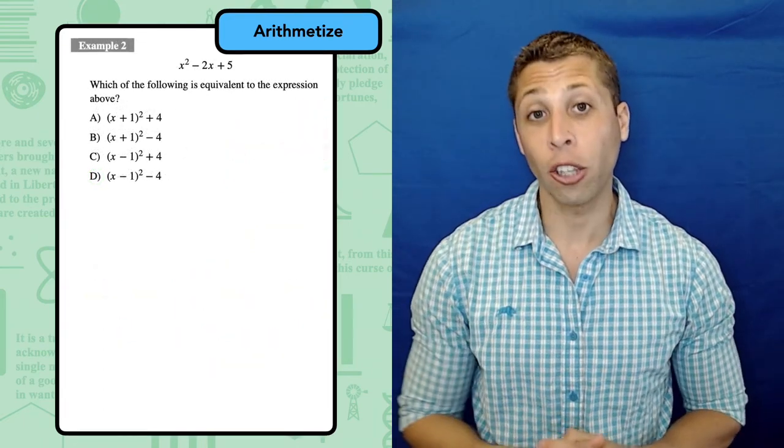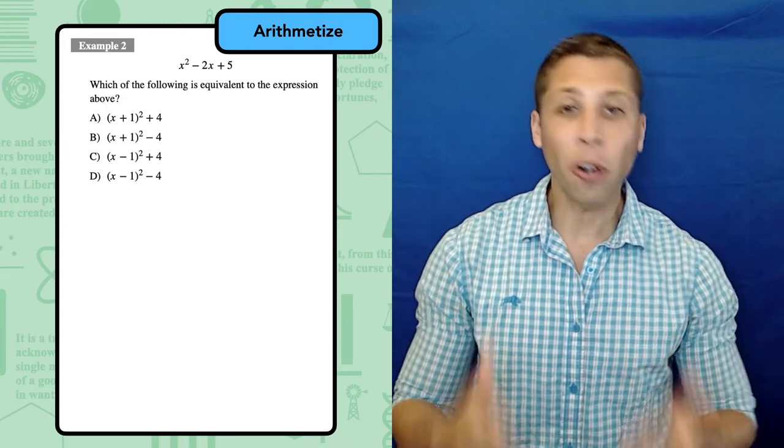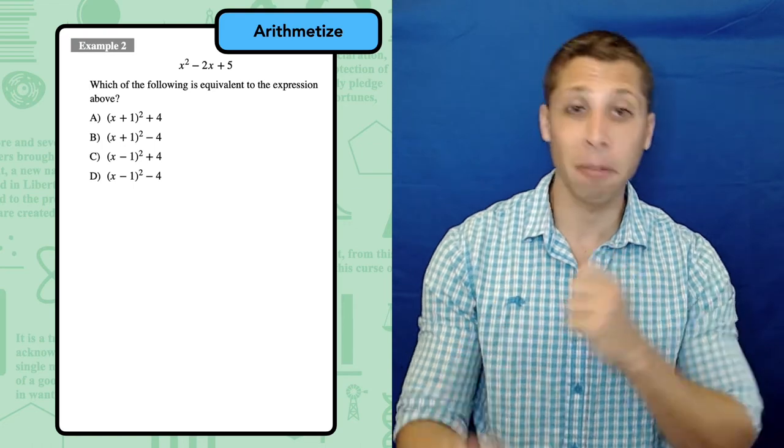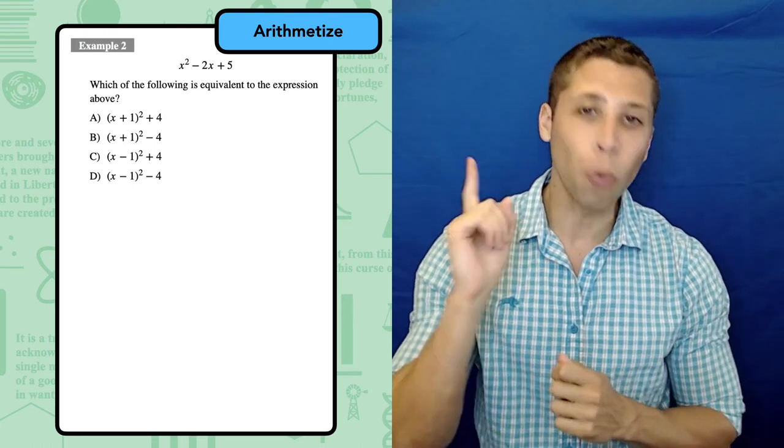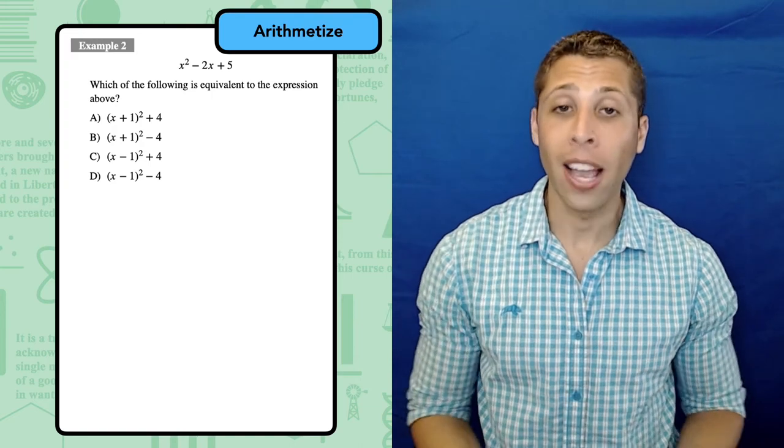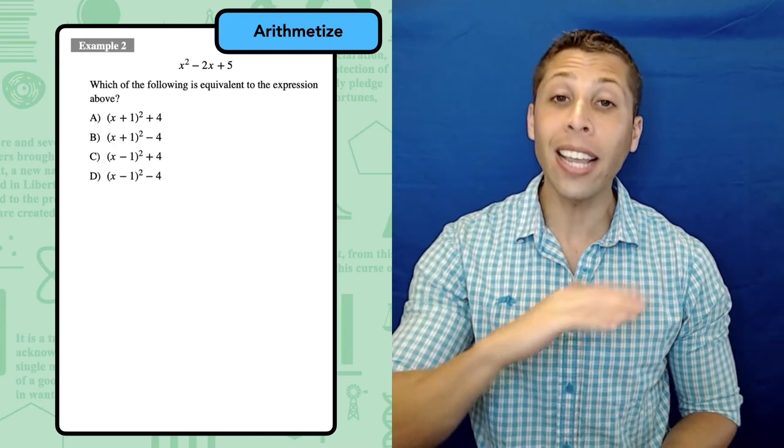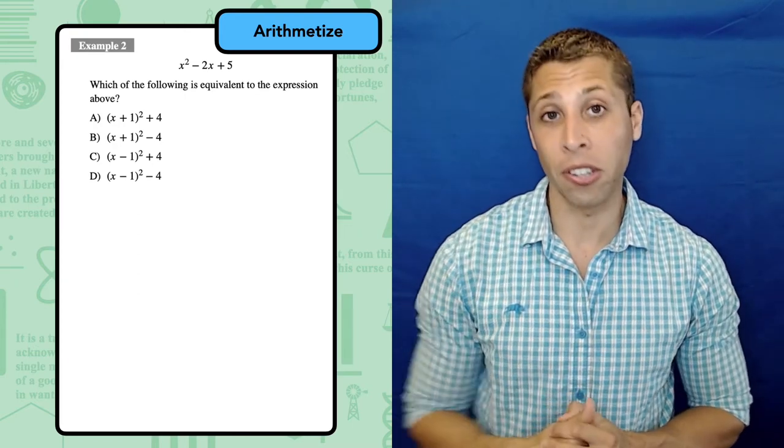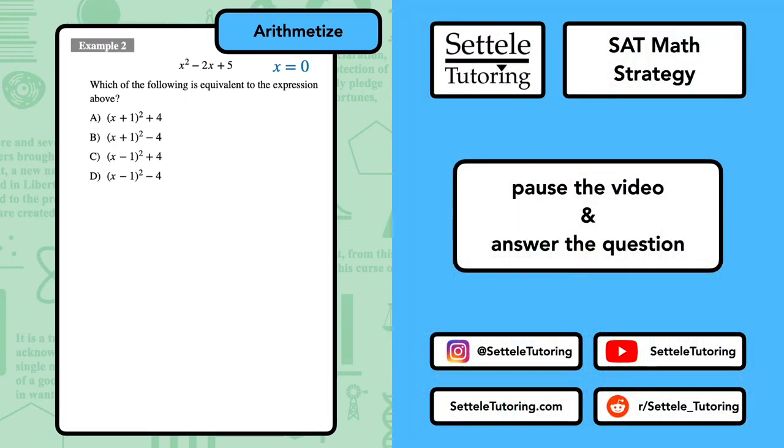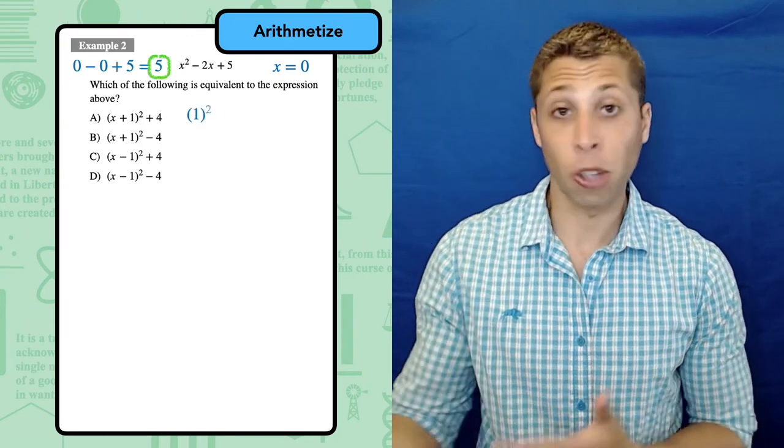Here's another question that could be solved with algebra, but look at those answer choices. They're almost identical except for the pluses and minuses. If I lose one negative while doing algebra, I'm going to get this question wrong, and I don't think it's worth the risk. Try arithmetizing instead. Again, pick the laziest number and make it equal to zero. If x is zero, then the original expression is equal to five. So is choice A.